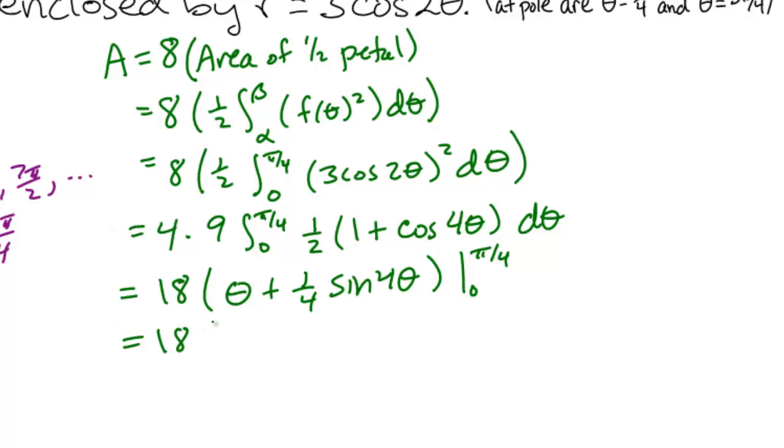So we have 18 times pi over 4 plus 0 minus 0 plus 0, and that simplifies to 9 pi over 2.